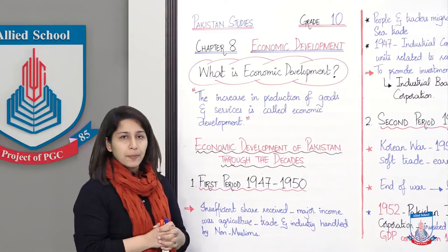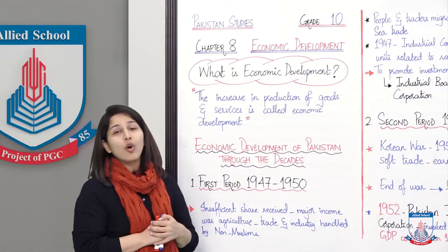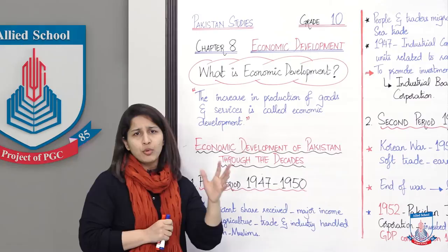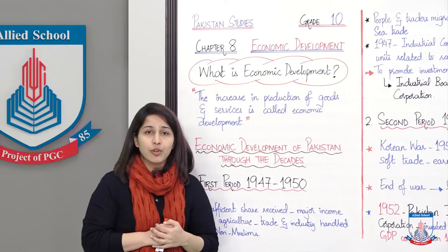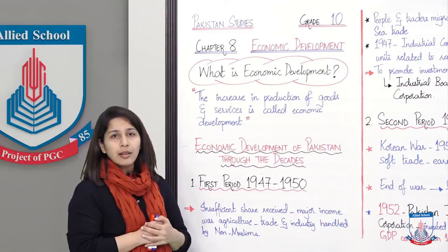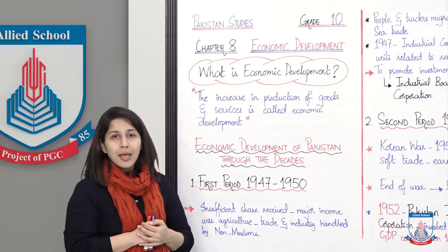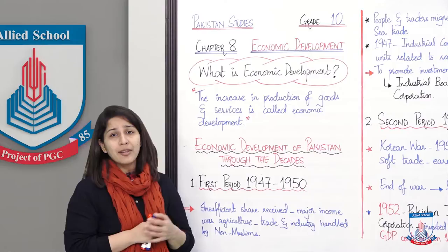First period tha 1947 se 1950 ka. Yeh wo time tha jab Pakistan naya naya bana tha — we got independence on 14th August 1947. Pakistan ko economy ke saath saath apni maishyat ke saath aur bhi bohot saray problems aur issues the jo overcome karne parhe. Aaj hum baat karte hain sirf maishat se related. Ek naye mulk ke liye apne administrative issues aur apni maishat ko sambhalna ek bohot important masla hota hai. Is masle mein sab se pehla jo issue aaya wo yeh tha ke insufficient share received — Pakistan ne division ke baad jab apna share receive kiya of the economy, of government officials, of money, wo bohot kam tha — that was not given in the proper share.